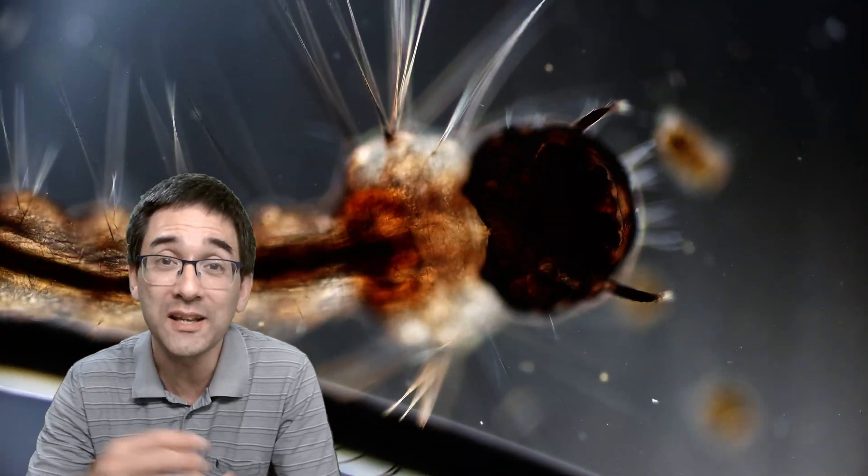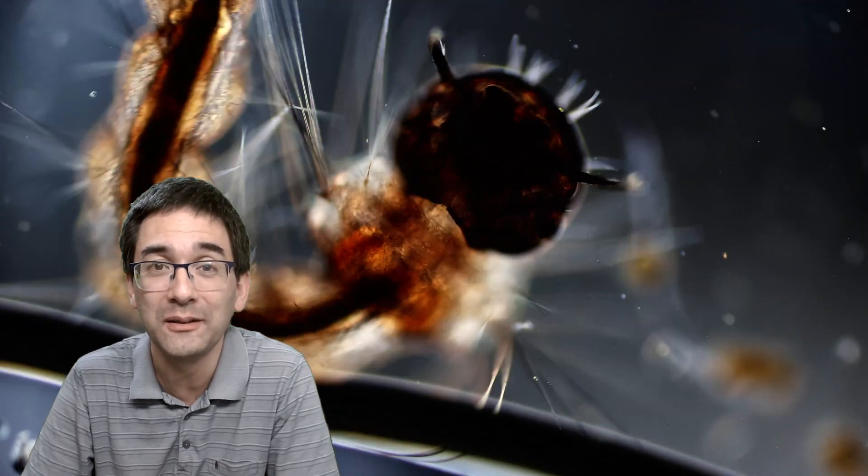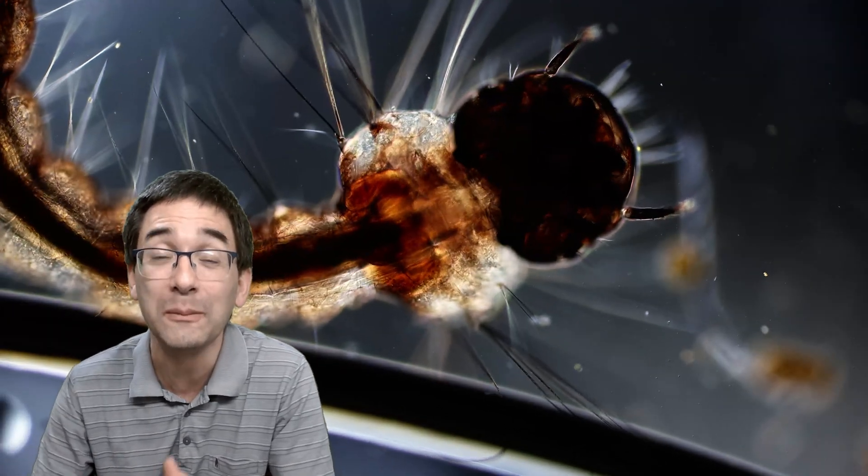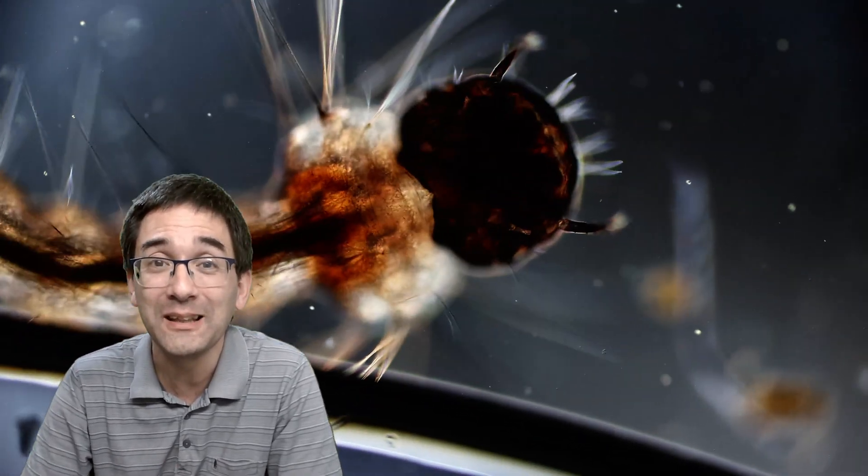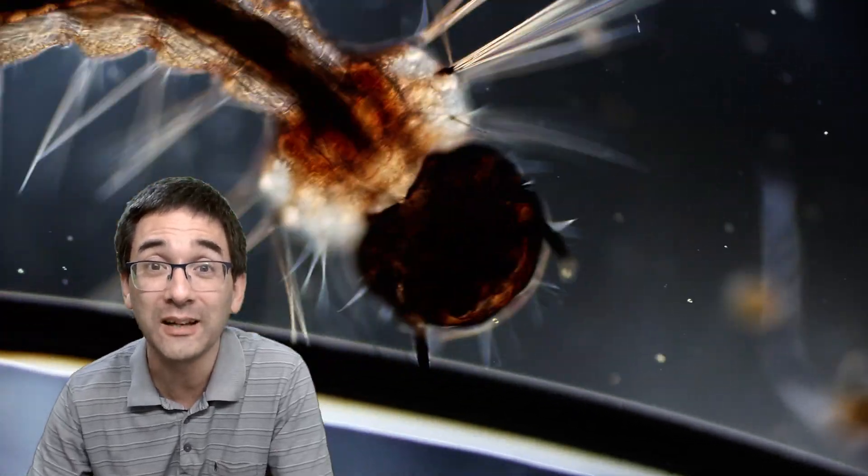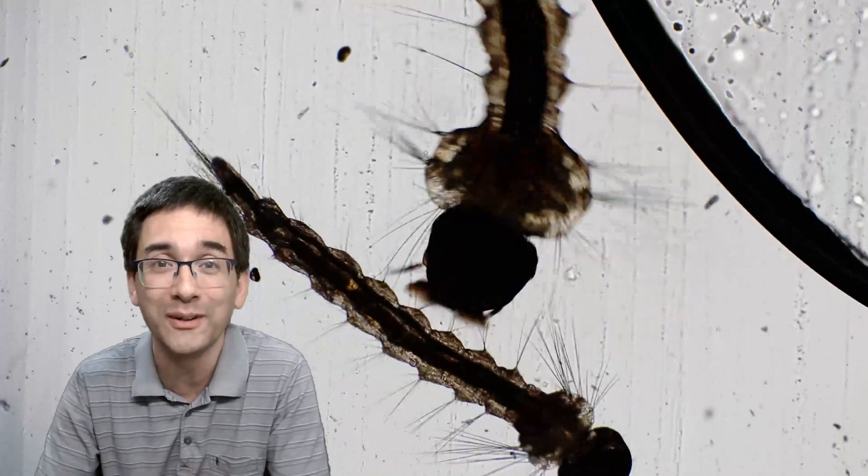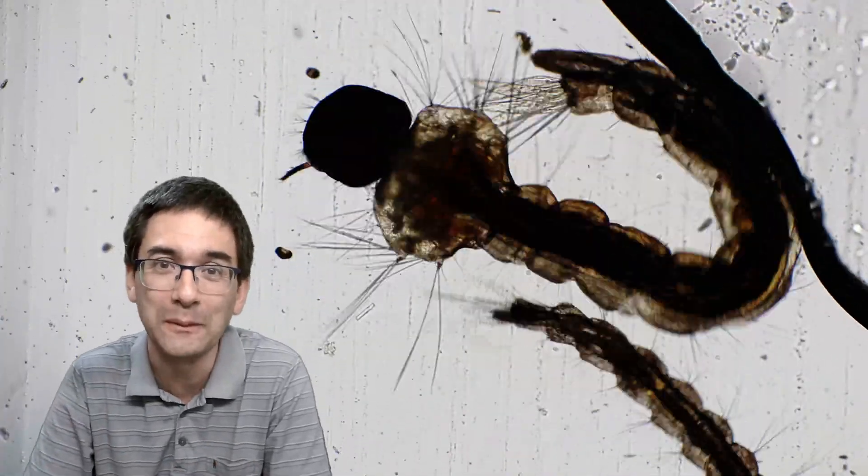Now what they do is as they grow, they molt. So this means they shed off their outer skin, and this is how they grow, and ultimately the adult mosquito will emerge. The females like to suck blood—they need that of course to make the eggs—and then the eggs are laid again in the water and the life cycle is completed.